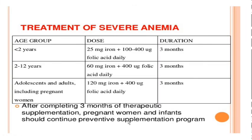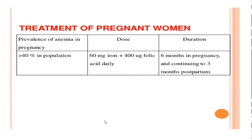Severe anemia: we have to increase the dosage of elemental iron. Even after completing 3 months of therapeutic supplementation, the pregnant woman and infant should continue preventive supplementation programs. Since the prevalence of anemia in pregnancy in Indian scenario is up to 80 to 90%, especially more in North India, for pregnant women we prescribe 60 mg of elemental iron plus 400 mcg of folic acid, to be given for at least 6 months in pregnancy and continuing up to 3 months postpartum.